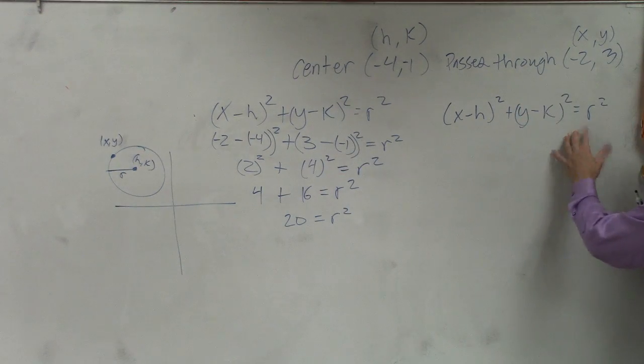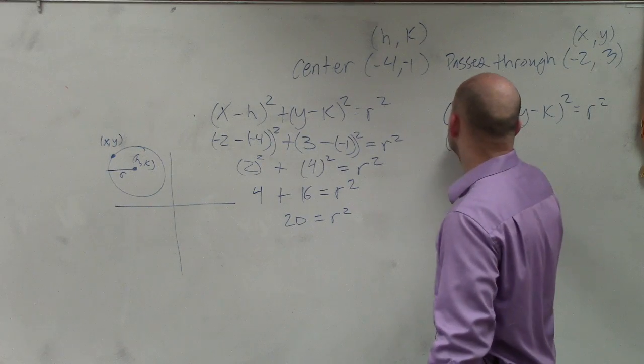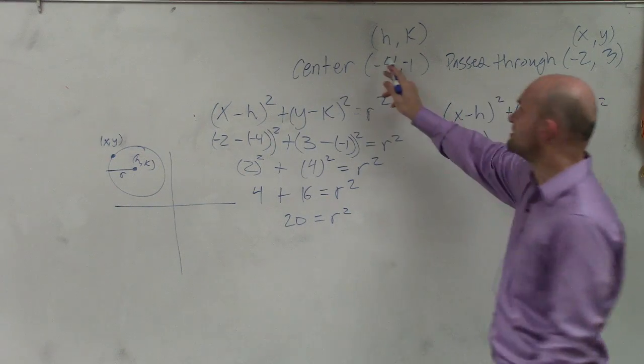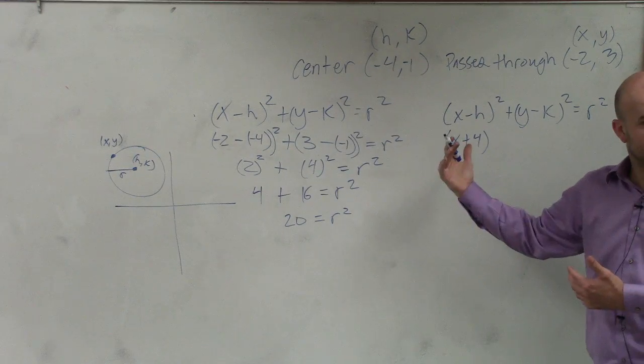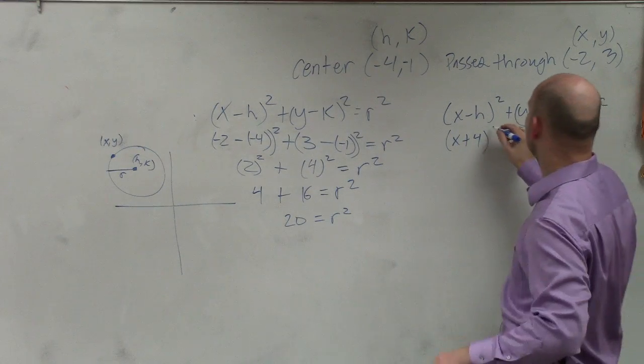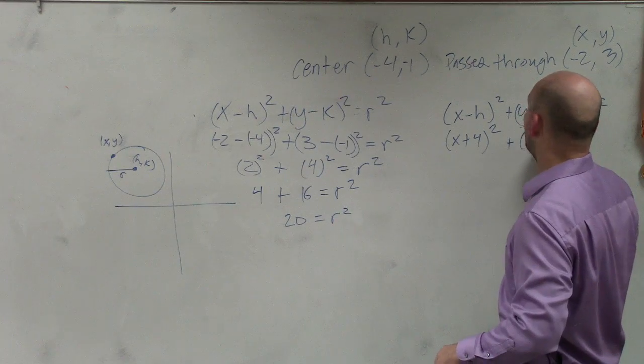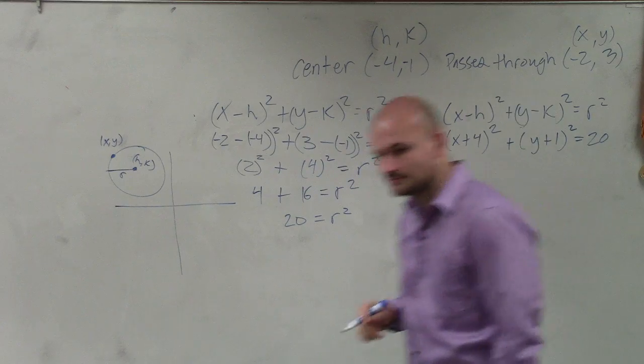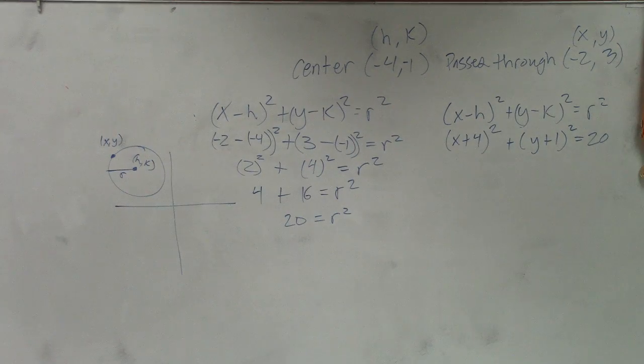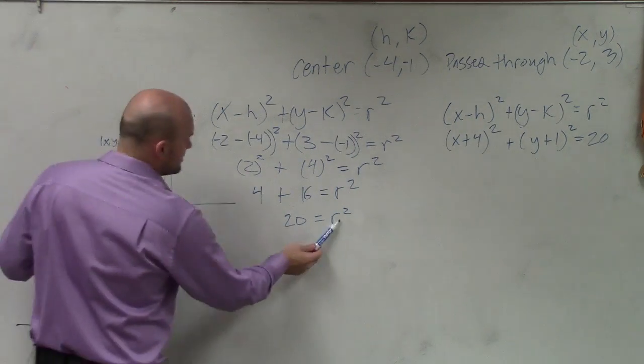Now that we know r and the center, we just plug in the points. So it's x plus 4, because remember, it's opposite of h. Since h is negative, the opposite of negative is positive. So it's x plus 4 squared plus y plus 1 squared equals 20. R squared is equal to 20.